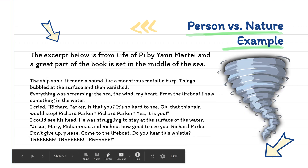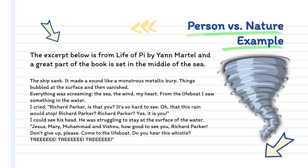Then we have an excerpt of what person versus nature would look like. This is from Life of Pi, set in the middle of the sea: 'The ship sank. It made a sound like a monstrous metallic burp. Things bubbled at the surface and then vanished. Everything was screaming — the sea, the wind, my heart. From the lifeboat, I saw something in the water. I cried, Richard Parker, is that you? It's so hard to see. Oh, that this rain would stop. Richard Parker? Richard Parker, yes, it is you. I could see his head. He was struggling to stay at the surface of the water. Jesus, Mary, Muhammad, and Vishnu. How good to see you, Richard Parker. Don't give up. Please come to the lifeboat. Do you hear this whistle? Tweet, tweet, tweet.' The main character is struggling against the force of nature — the ocean. Their ship has sunk and they're on a lifeboat, trying to get the tiger Richard Parker to come aboard.